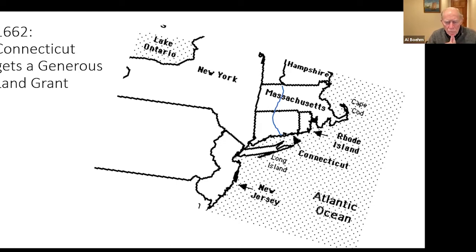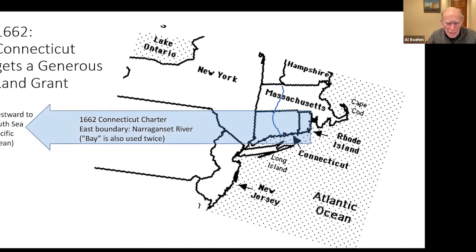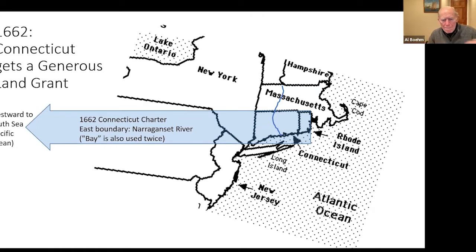Now, what was the land grant that came with our charter? It started from Narragansett Bay — named twice, Narragansett River named once — as the east boundary, and extended to the South Sea, running along parallel meridians all the way to the Pacific Ocean. That was our land grant — a pretty sweet deal — and this would be one key breakpoint of the charter.